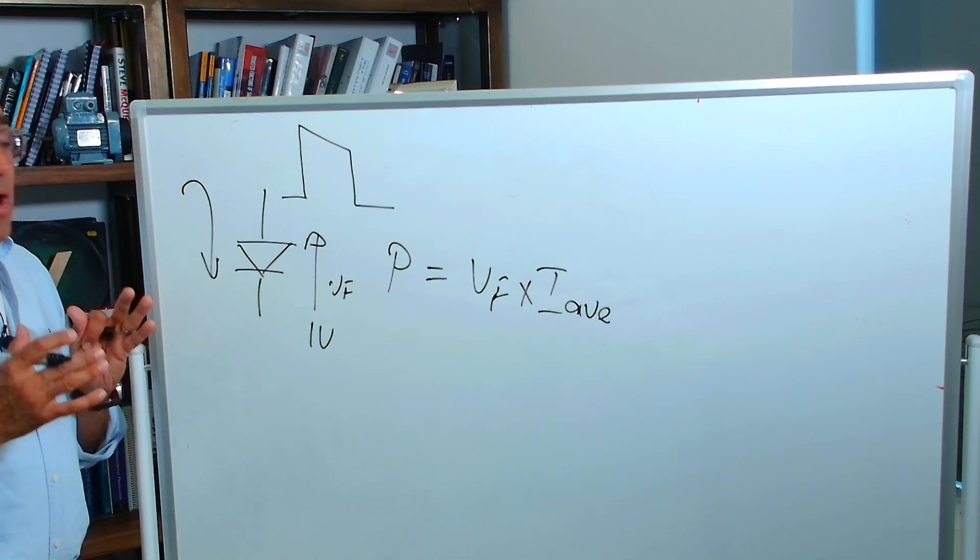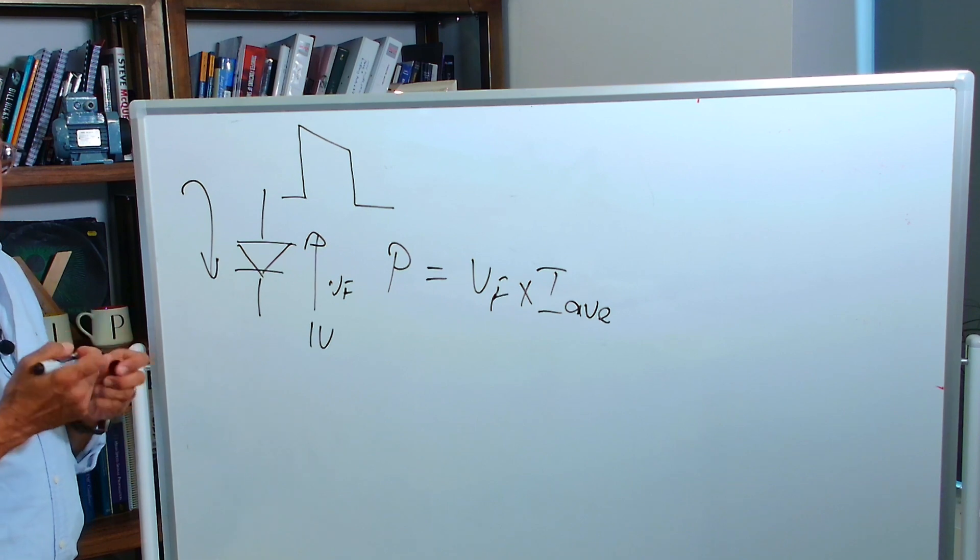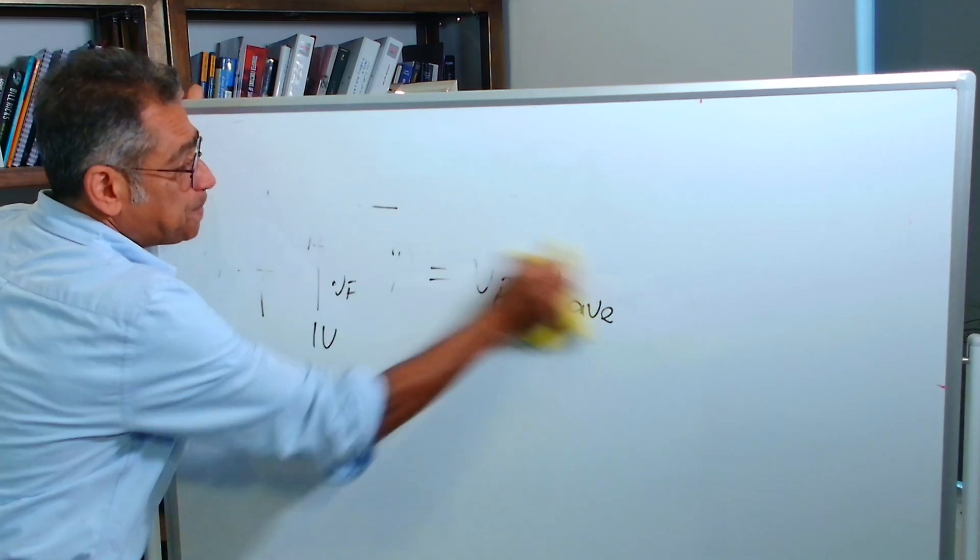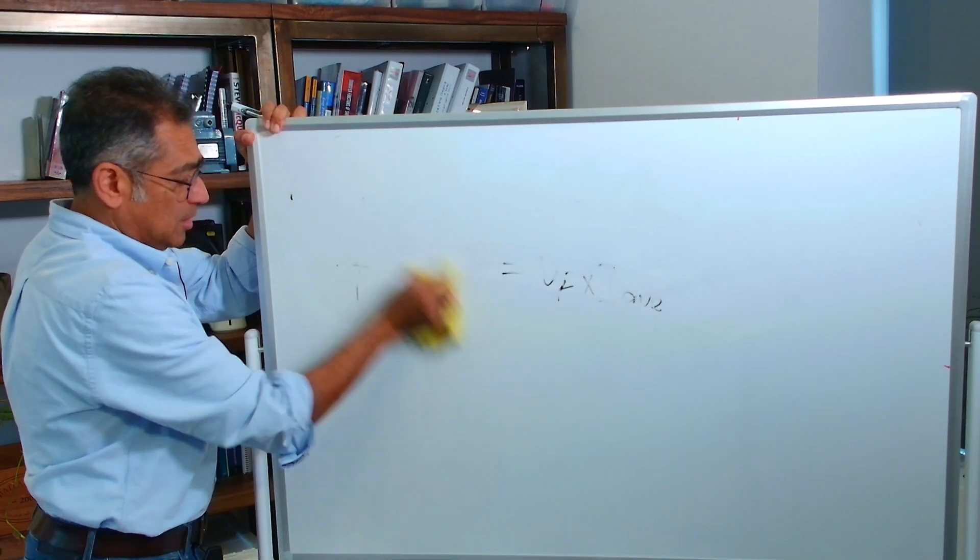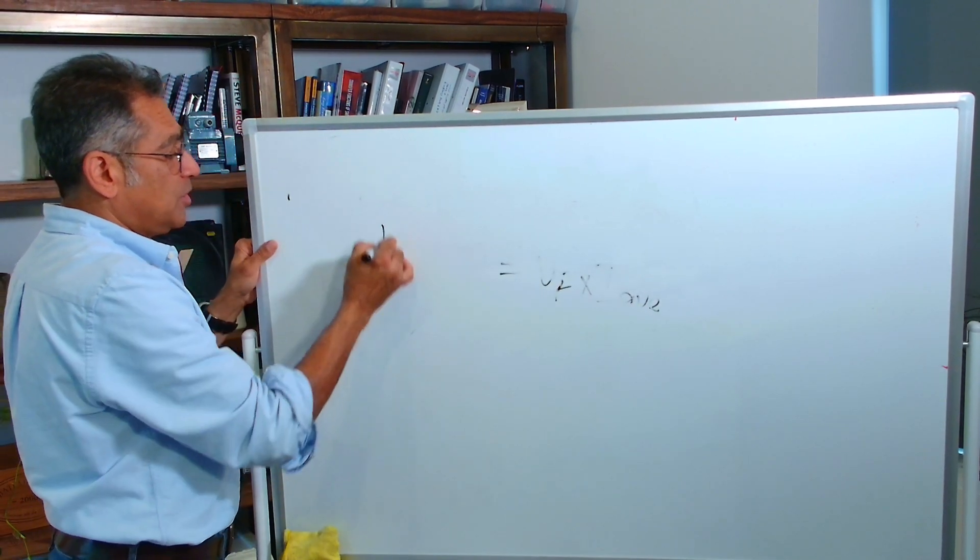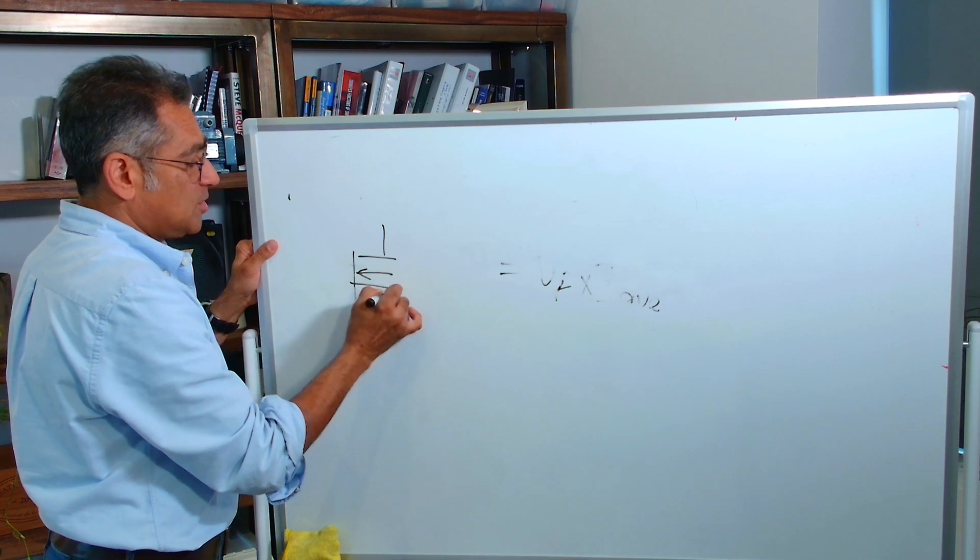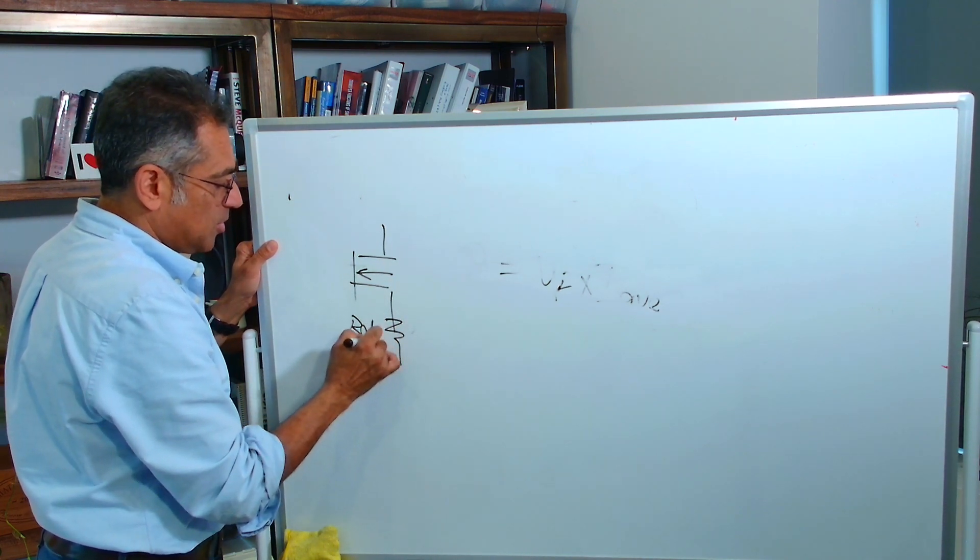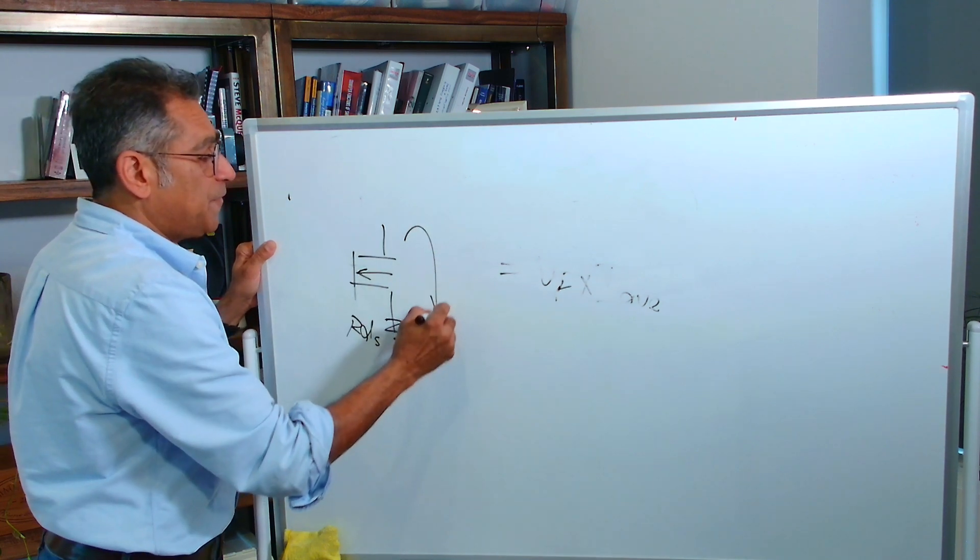Now, if you have both the voltage and the current varying, for example like in a MOSFET, whereby you again have a switch, here is your MOSFET, let us draw the RDS, the internal resistance of this MOSFET here. Now you've got a current flowing through here.